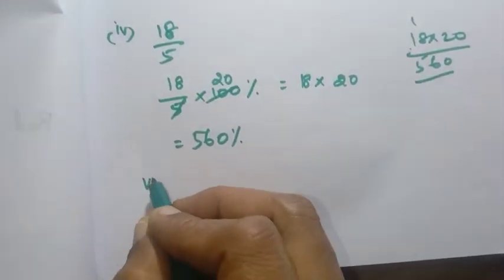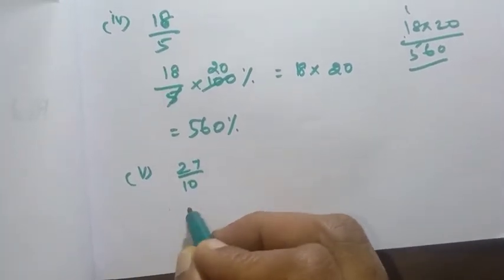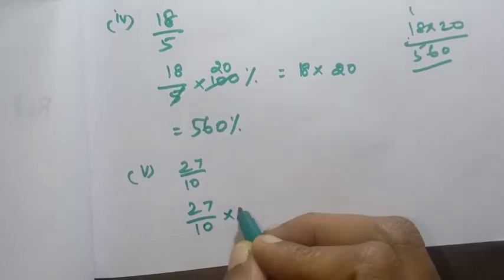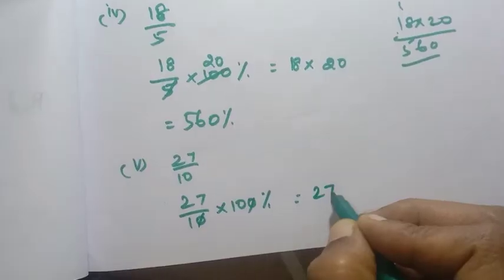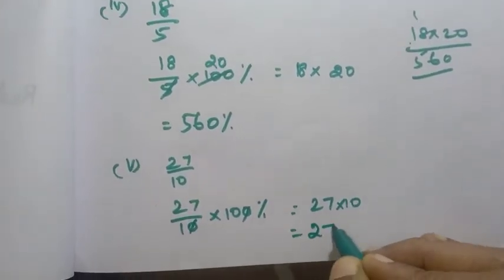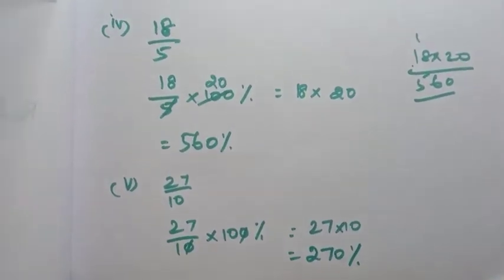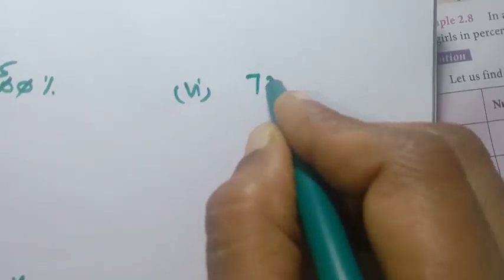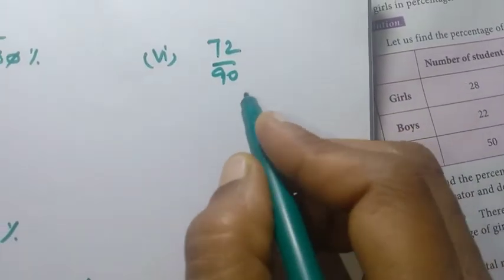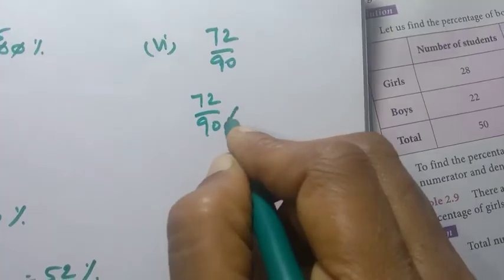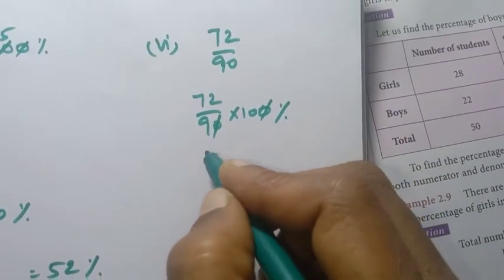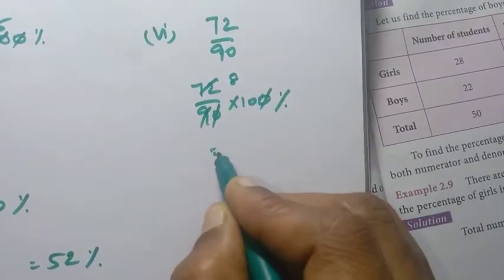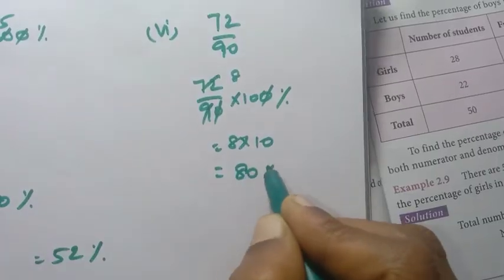Fifth sum: 27 by 10. Percentage = 27 by 10 into 100. Cancel zeros: 27 into 10 = 270 percentage. Sixth sum: 72 by 90. Percentage = 72 by 90 into 100. Cancel zeros: 9 eights are 72, so equal to 8 into 10 = 80 percentage.